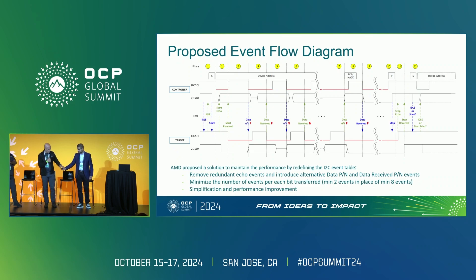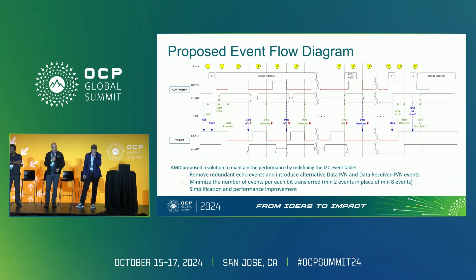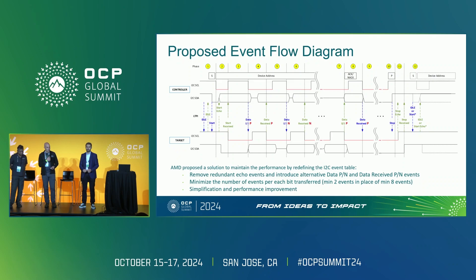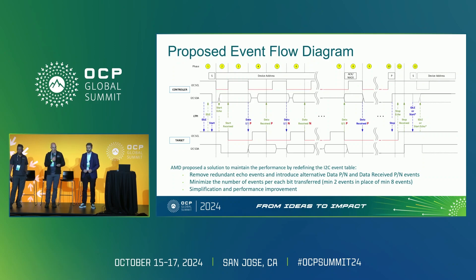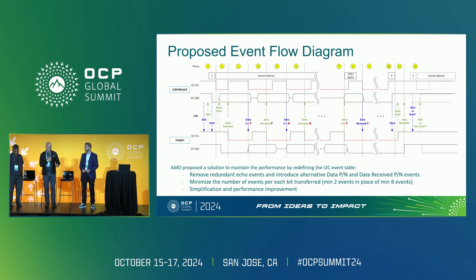As Kasper already showed, there was a mitigation for a problem found on the I2C bus where the bus could get hung in the case where echo events — used as separators — get lost due to a CRC error. Redundant echo signals are being added to maintain backward compatibility.